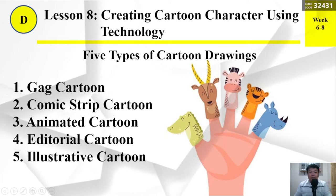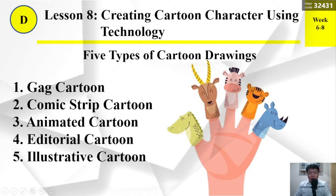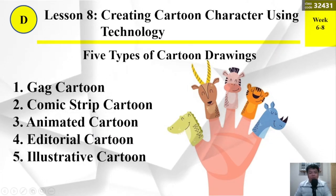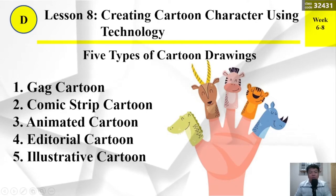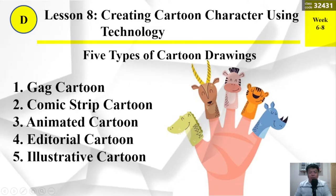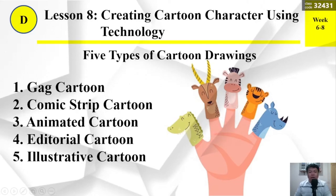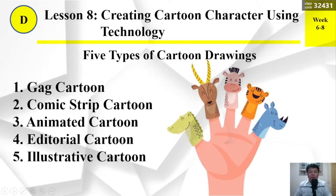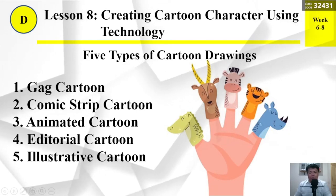Five types of cartoon drawings: Number 1 — gag cartoon; Number 2 — comic strip cartoon; Number 3 — animated cartoon; Number 4 — editorial cartoon; and Number 5 — illustrative cartoon.